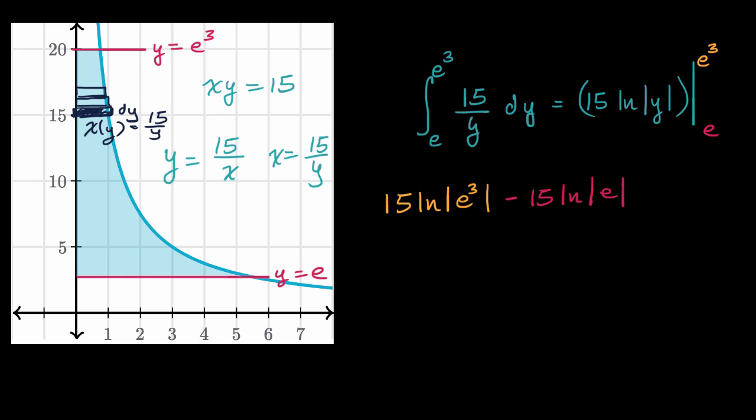What does this simplify to? The natural log of e³—what power do I raise e to to get e³? Well, that's just 3. And the natural log of e, what power do I raise e to to get e? That's just 1. So this is 15 times 3 minus 15, which gives us 30. And we are done: 45 minus 15.